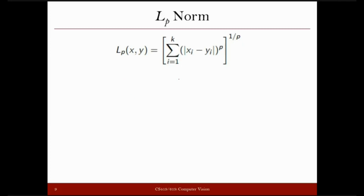Out of 1, 2, 1, and 10, the maximum is 10, and that is the output when we make p equal to infinity. When p becomes minus infinity, similarly it becomes the min distance, where the distance equals the minimum of all the differences computed in the respective dimensions.